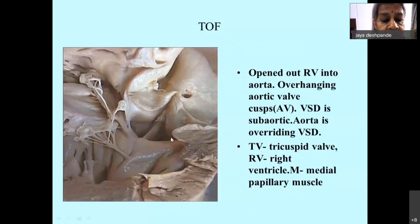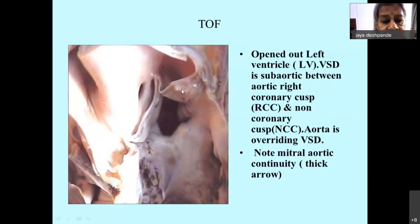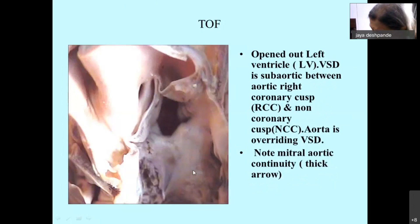Here you see the aortic valve override — almost two cusps are sitting across the VSD, representing significant aortic override. Here again is a sub-aortic VSD in a case of Fallot. Here you see a little less override. And here is another example of very significant aortic override — the whole of one cusp and much of the adjacent cusp are overriding the VSD, with a very large aorta.